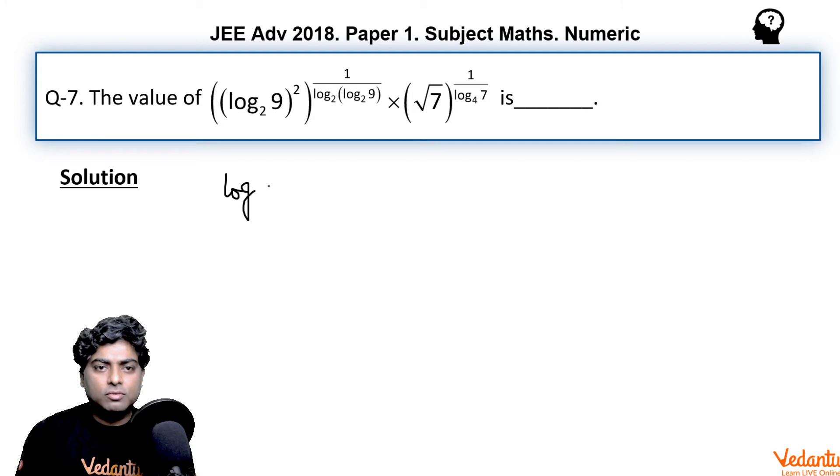We can write (log₂9)² multiplied by... Now according to a property of logarithms, if we interchange the base and index, then the value of log becomes a reciprocal, meaning 1/(log) can be rewritten with the base and argument swapped.